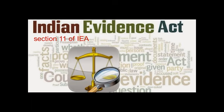Illustration A: The question is whether A committed a crime at Calcutta on a certain day. The fact that on that day A was at Lahore is relevant. The fact that near the time when the crime was committed, A was at a distance from the place where it was committed which would render it highly improbable, though not impossible, that he committed it, is relevant.